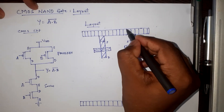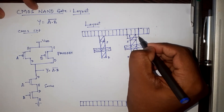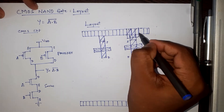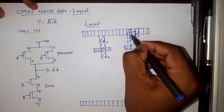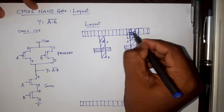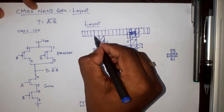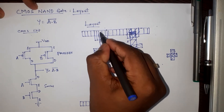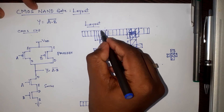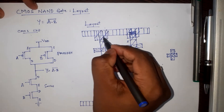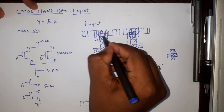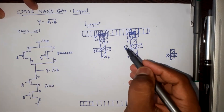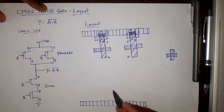We are going to place a contact here. This contact consists of metal as well as P diffusion, and at the center we show the contact cut. Similarly, one more contact is required on the other transistor — with P diffusion and the contact cut at the center. This makes the connection: source and source are connected to VDD.